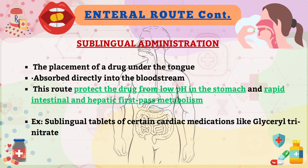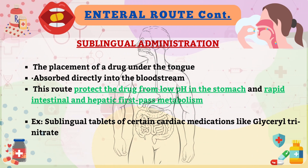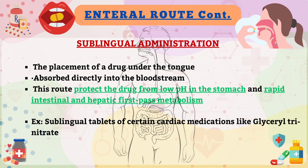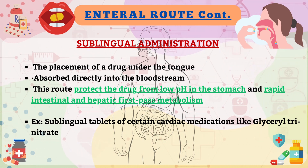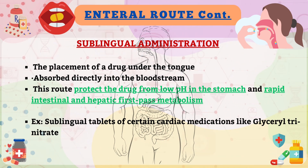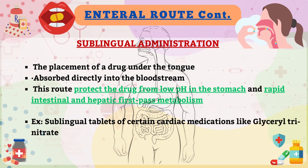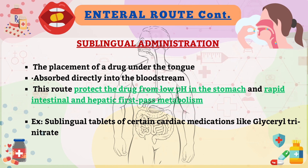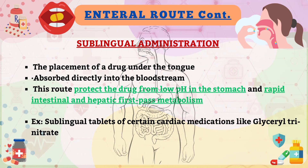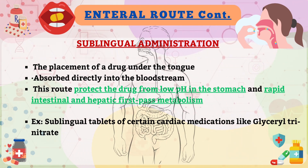In sublingual administration, the placement of a drug under the tongue allows the drug to absorb from the oral mucosa and diffuse into the capillary network. Venous drainage from the mouth directly enters the superior vena cava, bypassing the portal circulation. As a consequence, a drug held sublingually is protected from the low pH in the stomach as well as rapid intestinal and hepatic first-pass metabolism.